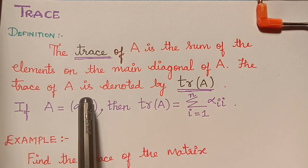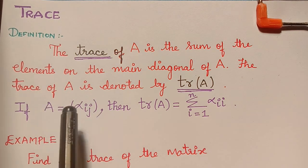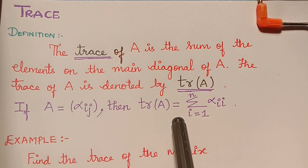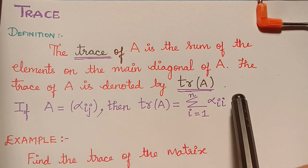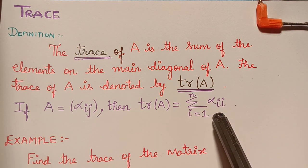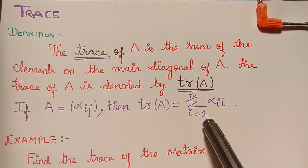If those are the diagonal elements of a matrix A, then the trace of A is given to be the summation of all the diagonal elements alpha_ii for i equal to 1 to n.